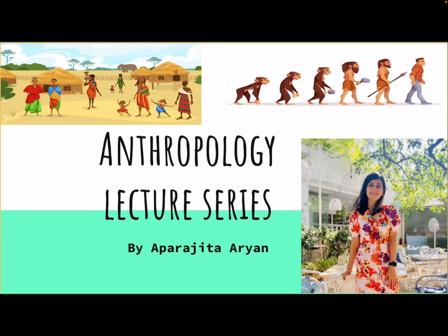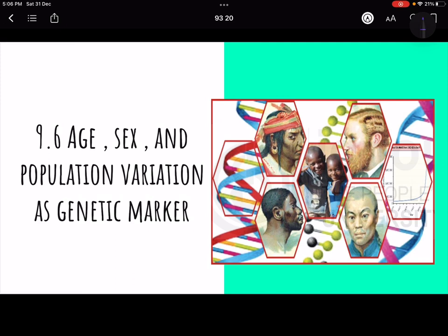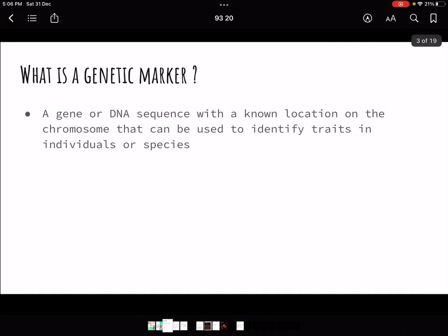Welcome to the next lecture in our anthropology series. Today we are going to start with unit 9.6, which covers age, sex, and population variation as genetic markers, along with some other related topics. In this unit we are going to cover genetic markers and how they are distributed across different races.